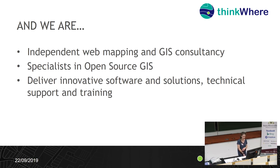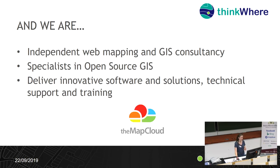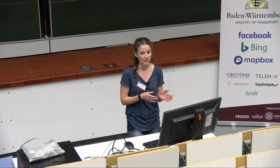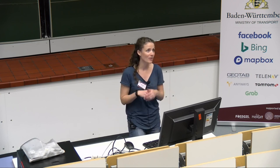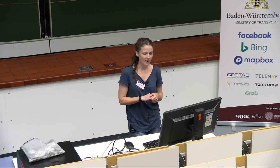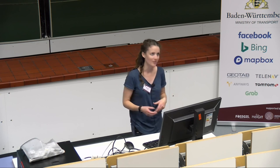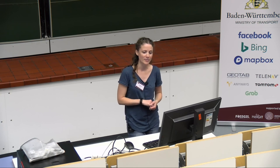Just to quickly tell you a little bit about who we are: we're an independent web mapping and GIS consultancy based in Stirling, again in the centre of Scotland. We're specialists in open source GIS and technologies, and our core platform, Map Cloud, is based on the full open spatial stack — PostGIS, GeoServer, MapProxy, the whole works. While we're now a private limited company, our history and lineage is really rooted in the public sector — we were a shared service for three local government organisations for a number of years before spinning off as a separate private company in 2007.